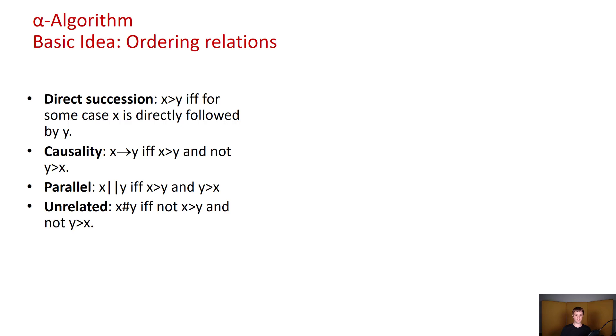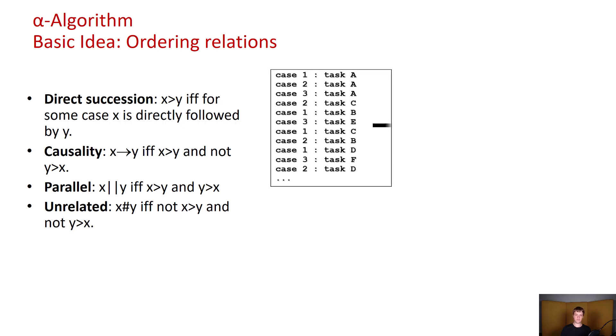To understand how those relations are found from an event log let's take a look at an example. Here we have three cases ABCD, ACBD, AEF. Now based on these case variants we can infer multiple different ordering relations between the activities. For example there is a direct succession from A to B because there is at least one case where A is immediately followed by B.